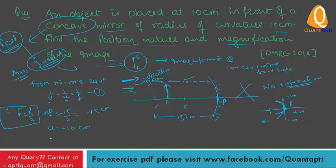Find V from equation. V is minus 30 cm. Minus 30 cm means image formed in front of concave mirror on the left side. The image is 30 cm from the mirror on the same side as object. Position is image 30 centimeter in the front of mirror on the same side of the object.